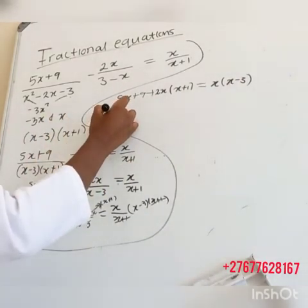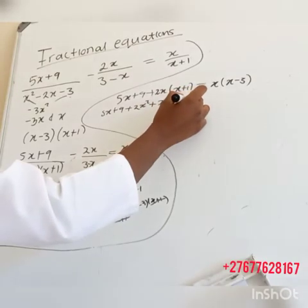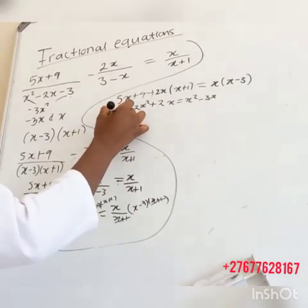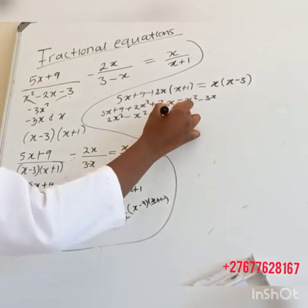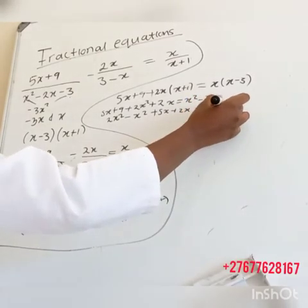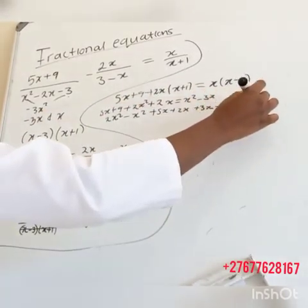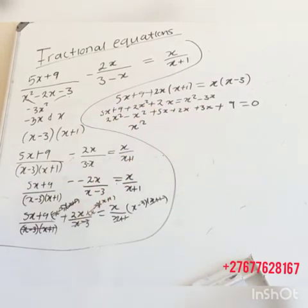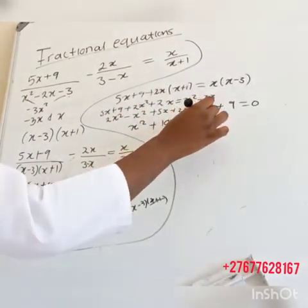So this gives us 5x plus 9 plus 2x squared plus 2x equals x squared minus 3x. Now let's group them together: 2x squared minus x squared, plus 5x plus 2x plus 3x, plus 9 equals 0. So 2x squared minus x squared is x squared, and 5 plus 2 plus 3 is 10x. That gives us x squared plus 10x plus 9 equals 0.